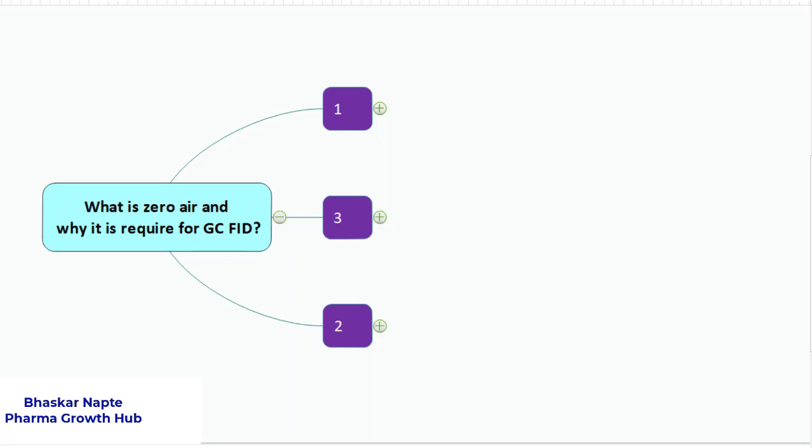Now it is not just air, but you must have seen that the cylinder is labeled as zero air. So what is meant by zero air? What is the difference between normal air and zero air? This is the question, and the next one is why is it really required in case of gas chromatography with FID detector.